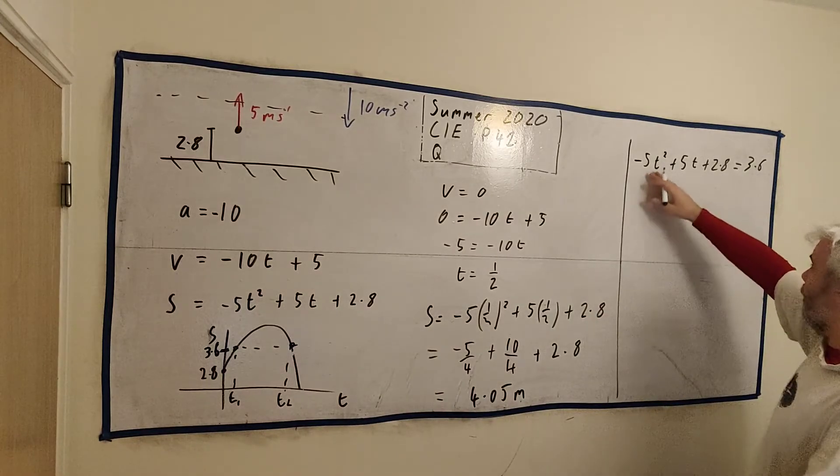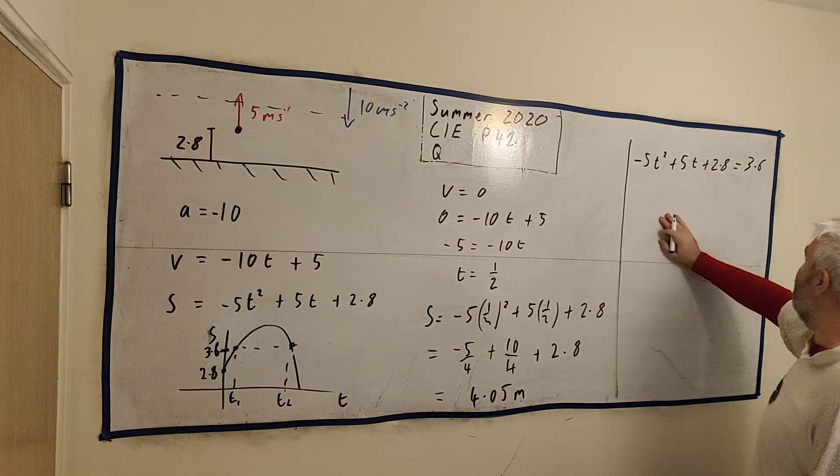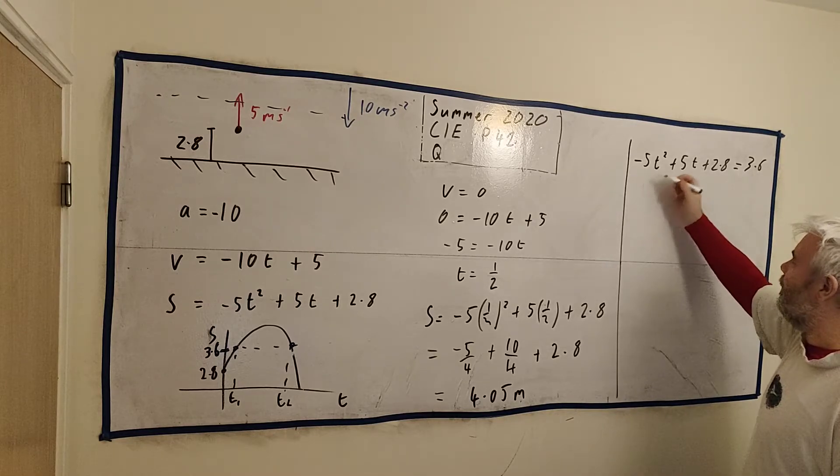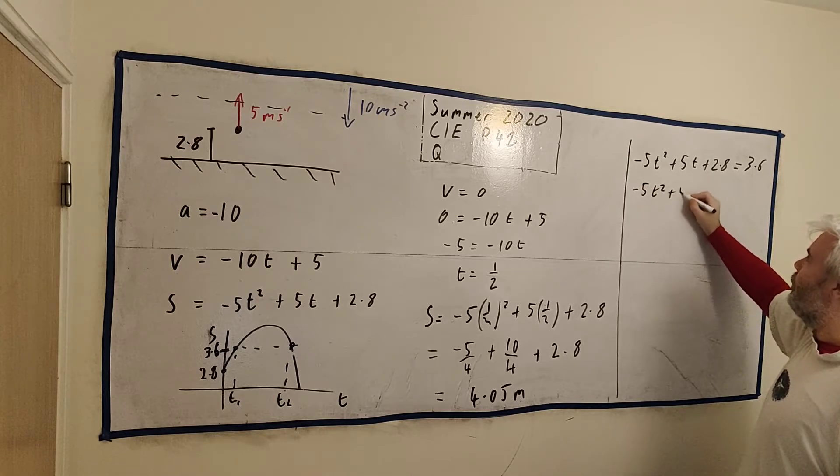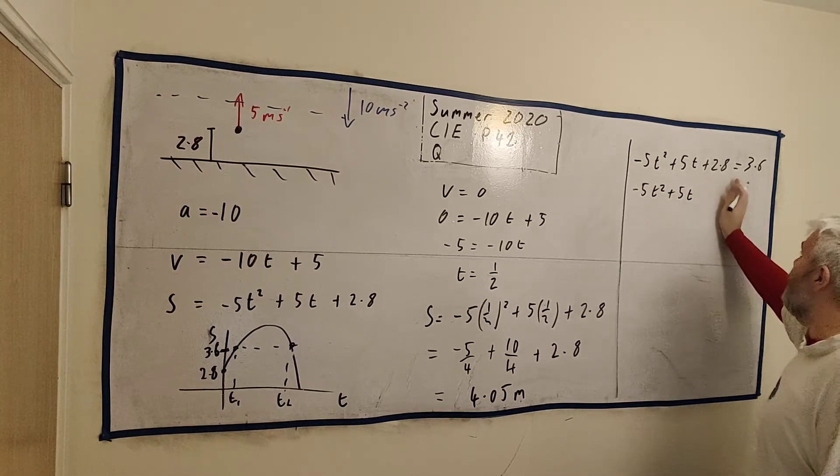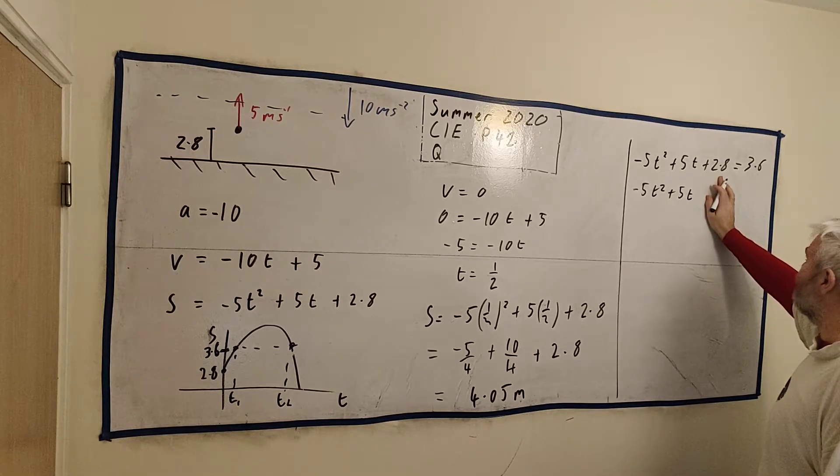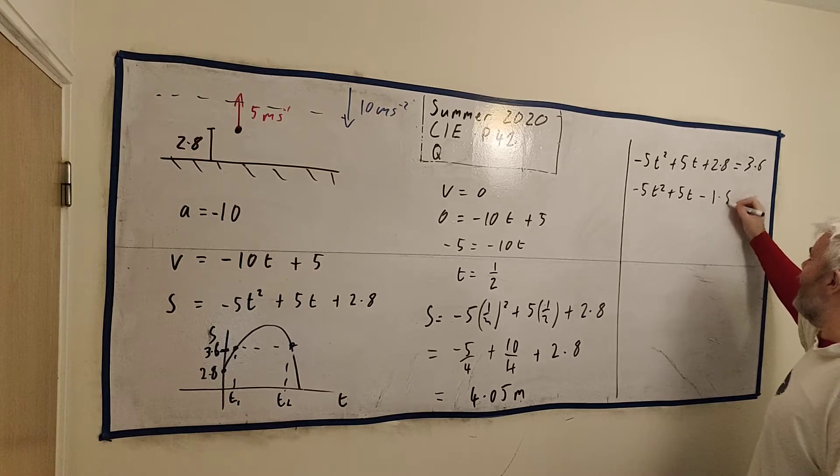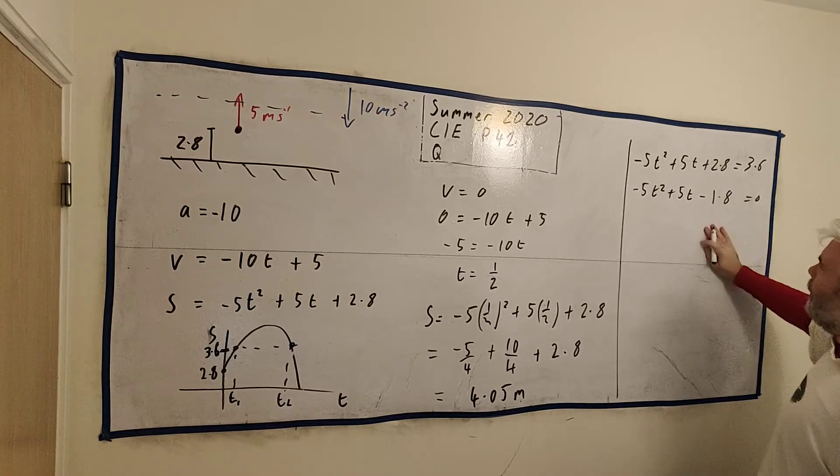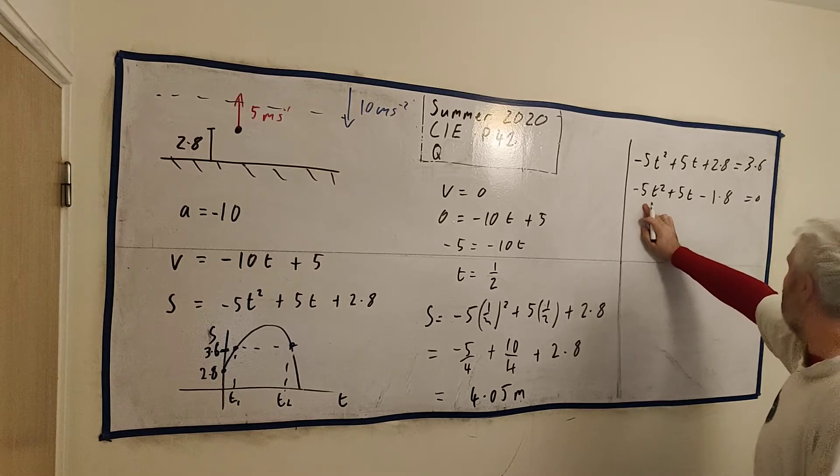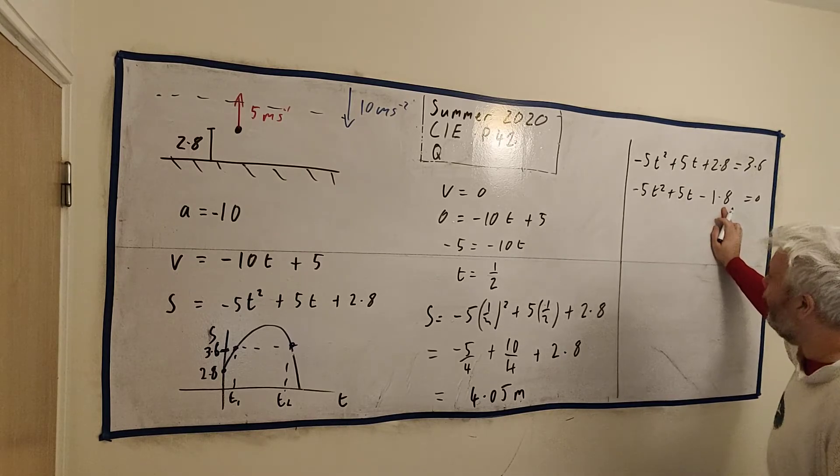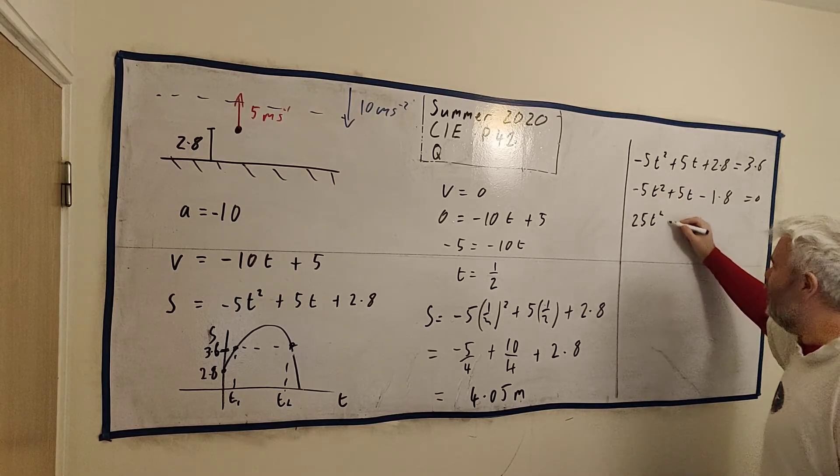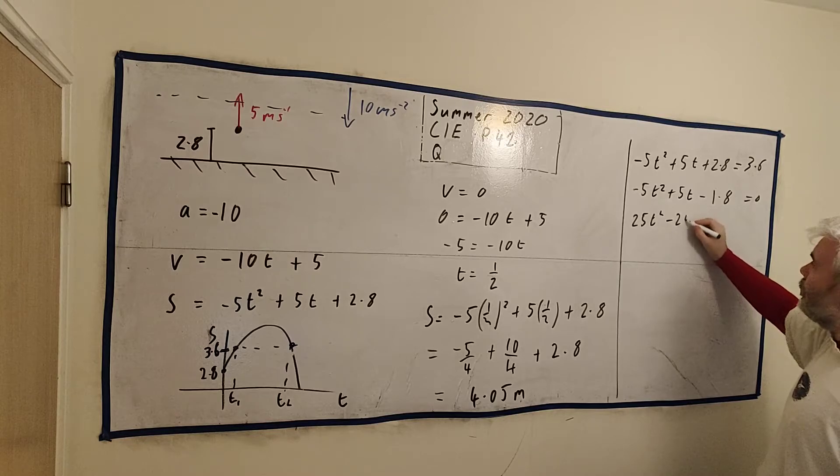We just need to rearrange this. You don't need to make it neat or anything. Minus 5t squared plus 5t, and this would become minus 0.8 equals 0. I want to get rid of this decimal. Multiply everything by minus 5. We get 25t squared minus 25t.